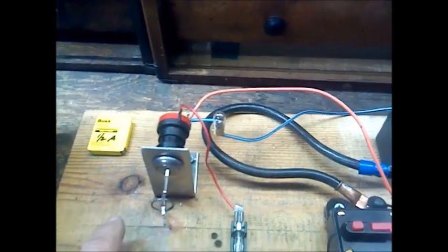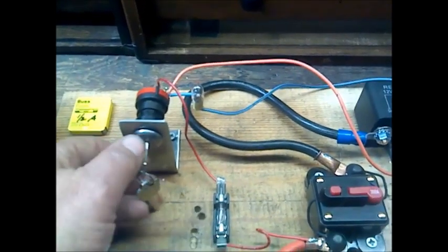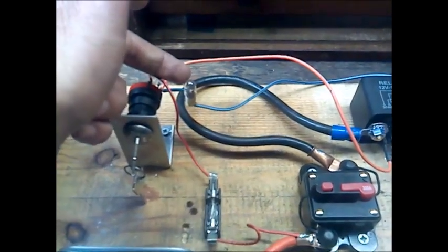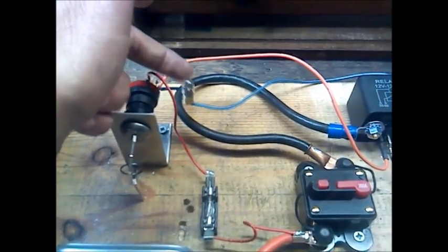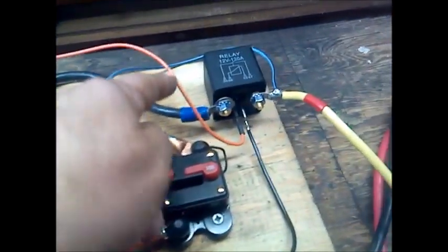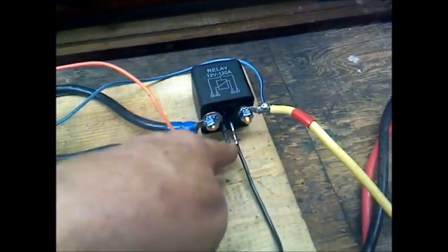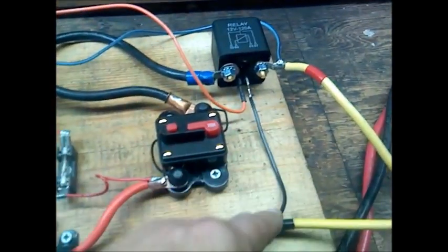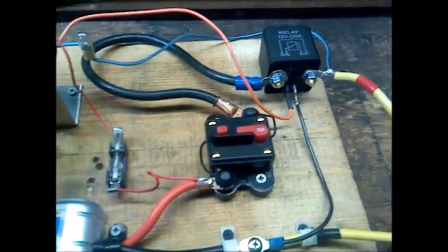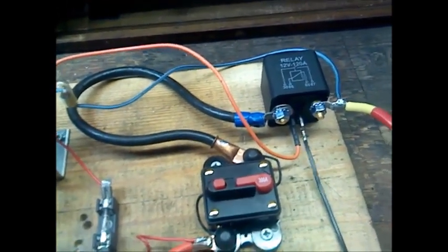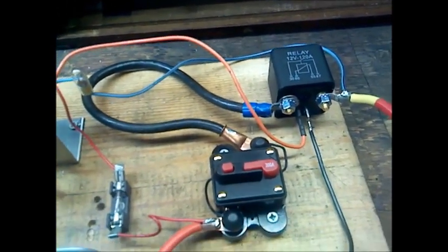Now that the capacitor bank is charged, we can go to the run position. The run position takes this circuit out of play and puts this one in play. The control lead for this relay—12 volts—goes to this relay and energizes it. The other side goes to ground to complete the circuit. If you listen, besides the key click, you can hear the relay engage.